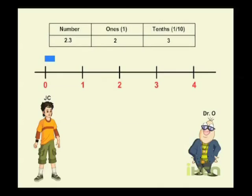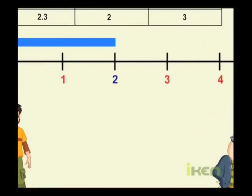So first, we have to go till 2 on the number line. Since the number is 2.3, which is in between 2 and 3,